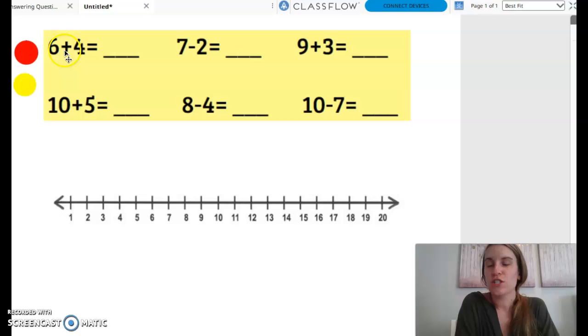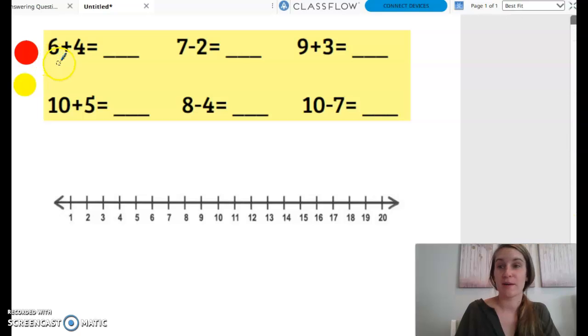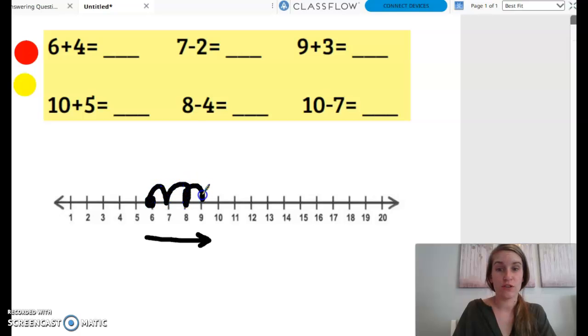So the first one is six plus four. Well, we should know that the numbers six and four are friends of 10, but the way we could solve it with our number line is we start at the number six, and if we're adding, the number is getting bigger, so we need to go to the right. We're gonna add four. One, two, three, four. Six plus four equals 10.